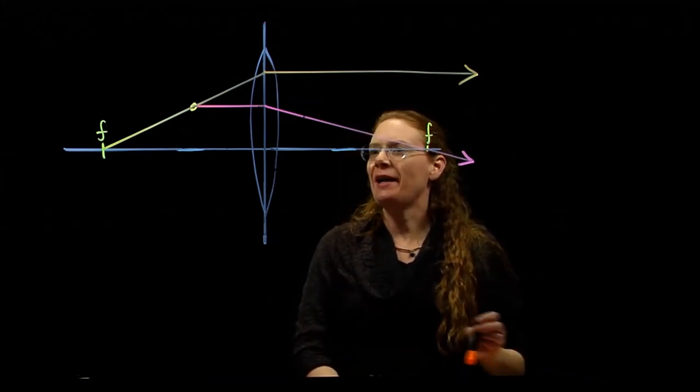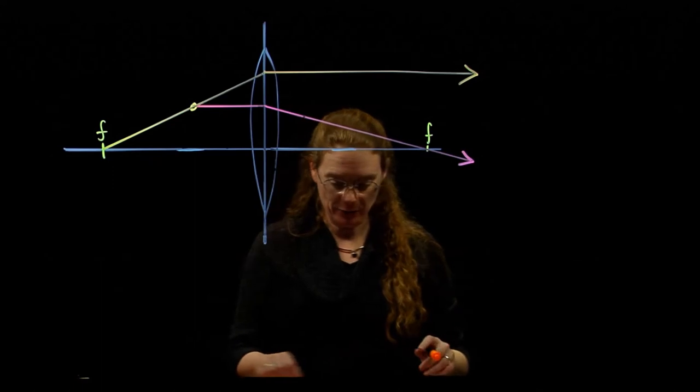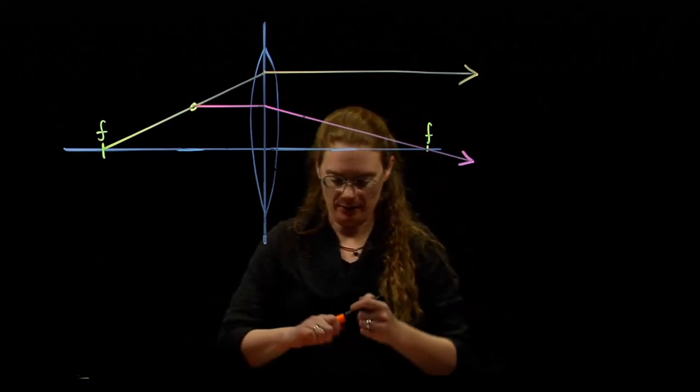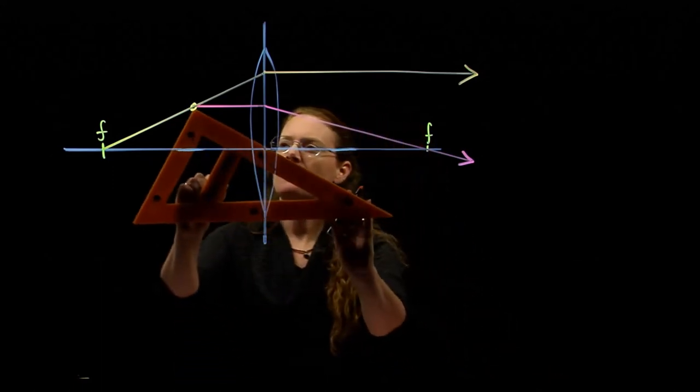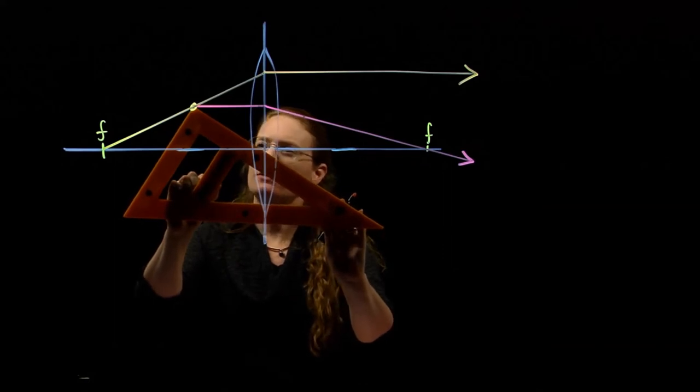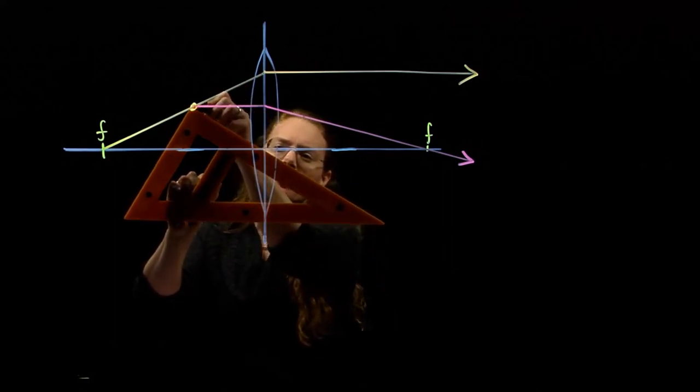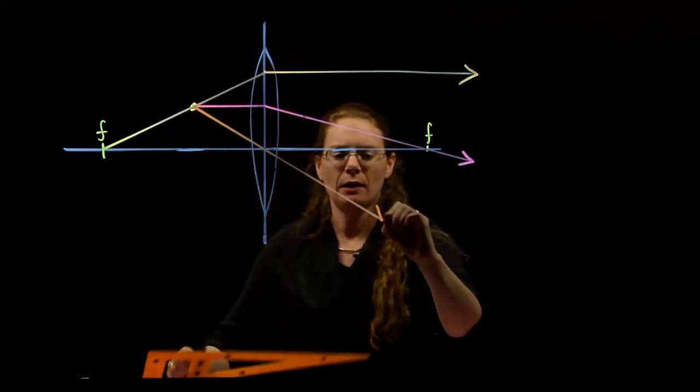Our third ray is the easy one, right through the center of the lens. Alright, here we go. So there's number three. That one leaves it.